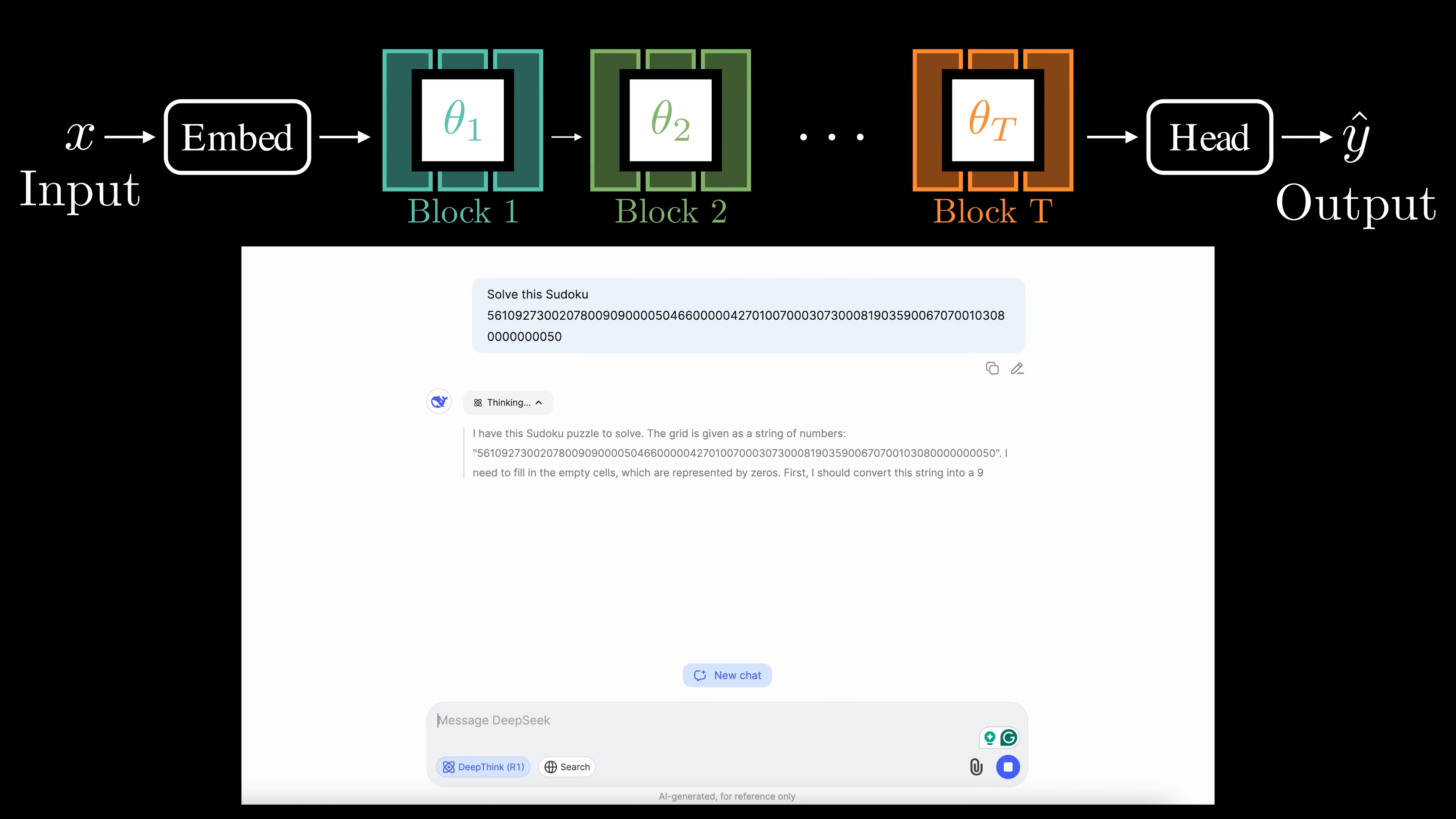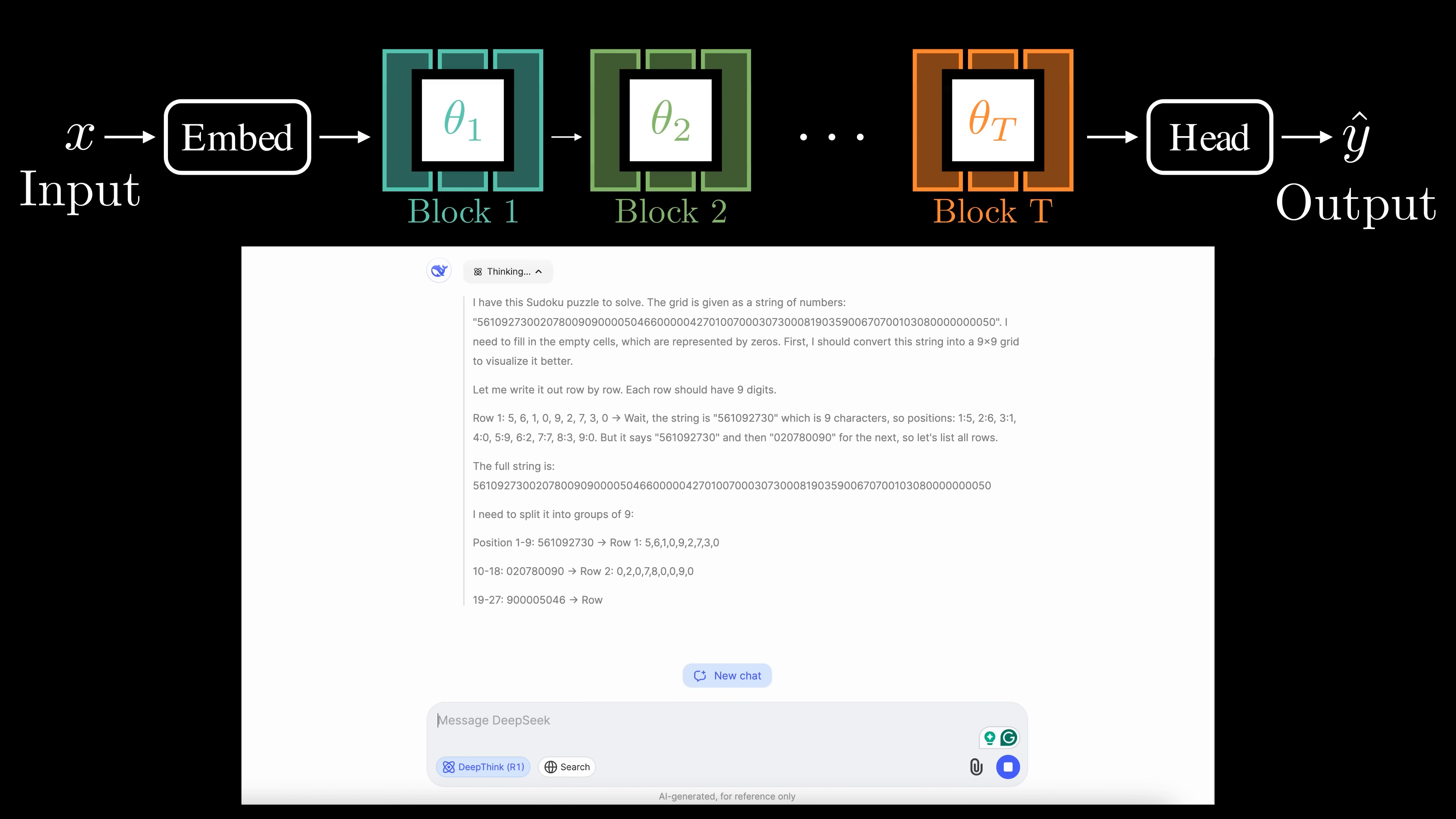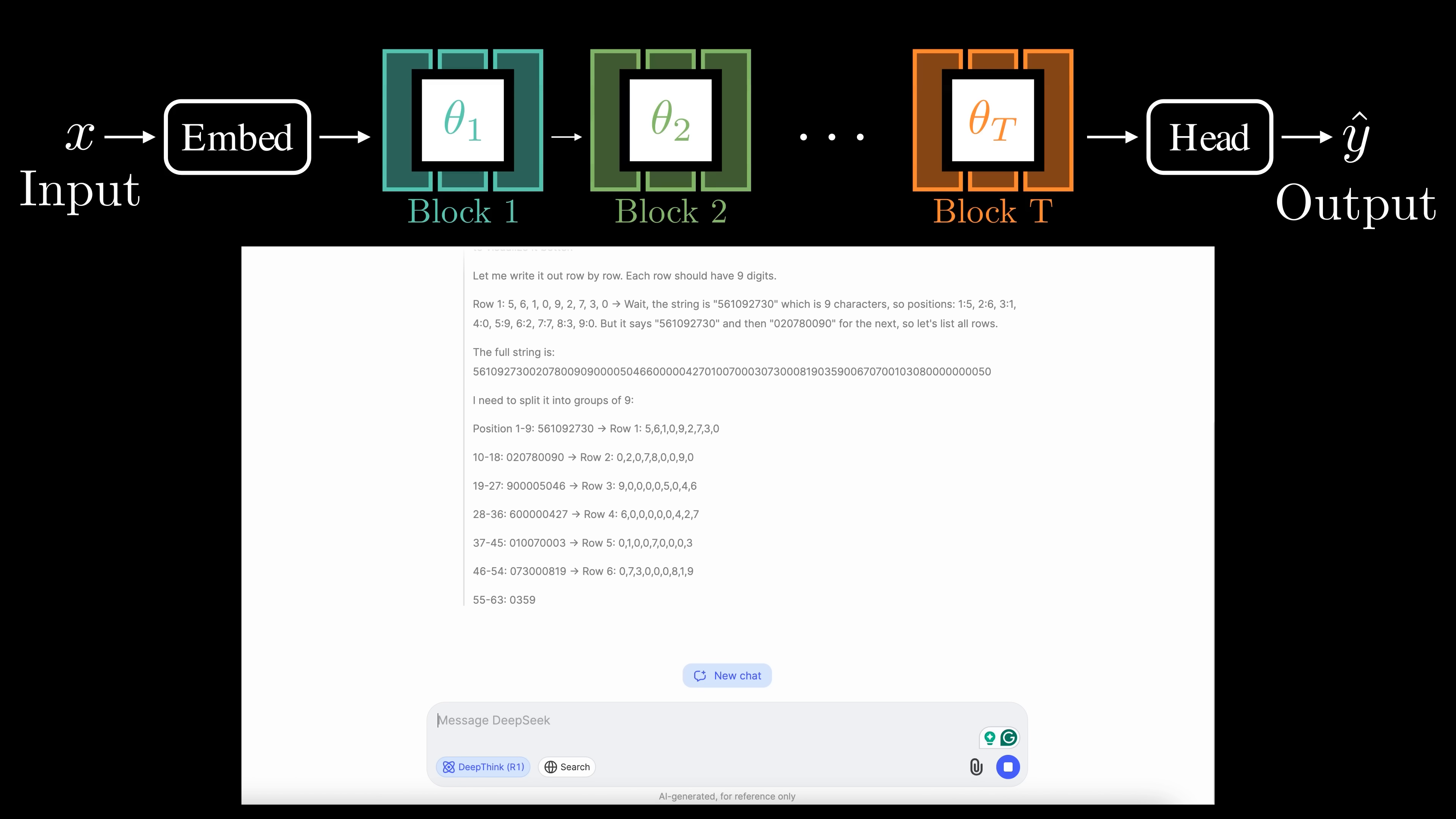One widely used approach is chain of thought reasoning. Here the model explicitly writes out its reasoning steps in natural language. This allows the model to perform multi-step complex reasoning by breaking the problem into intermediate steps.